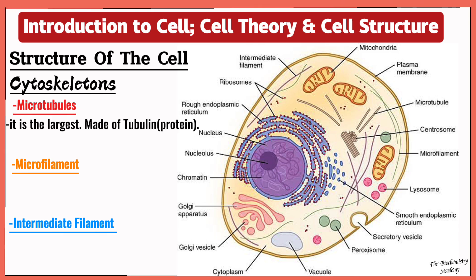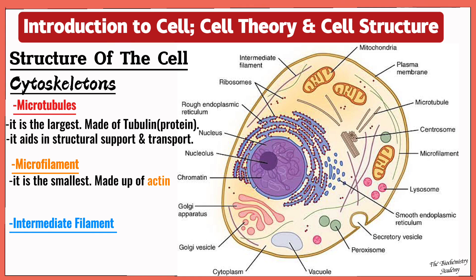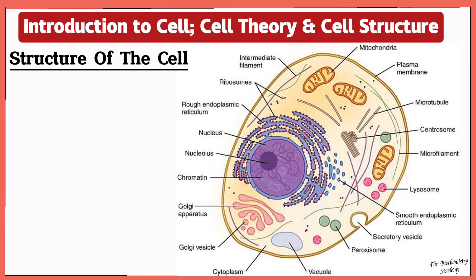The transportation of those vesicles that we talked about. Now the next is the microfilament, which is the smallest of the three networks. It is made up of a protein called actin which aids in elongation and contraction, enabling the cell to move. And next is the intermediate filament. It is in between the microtubule and the microfilament, and it aids in providing mechanical support for the cell.